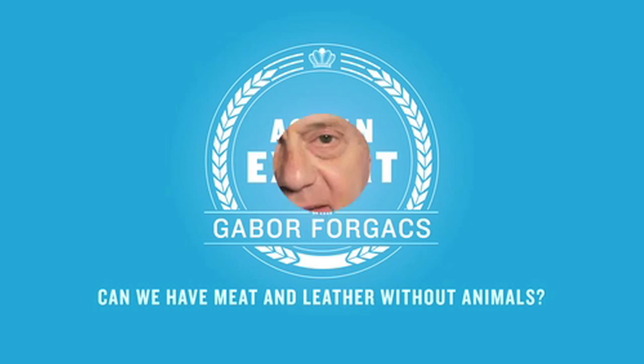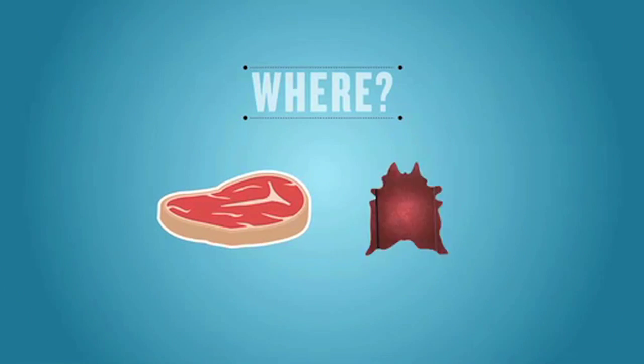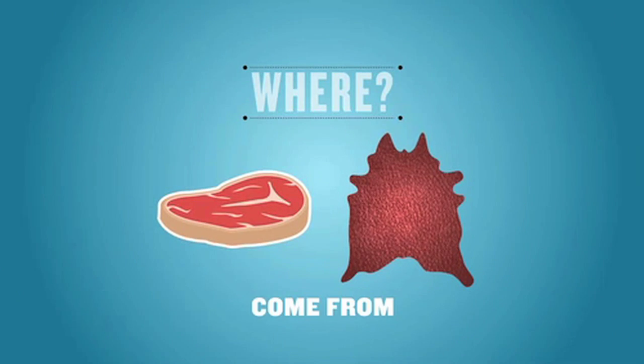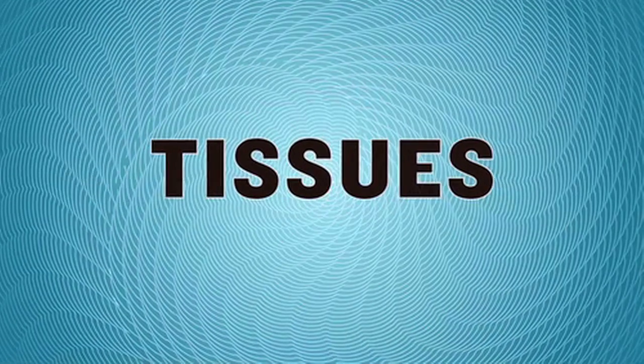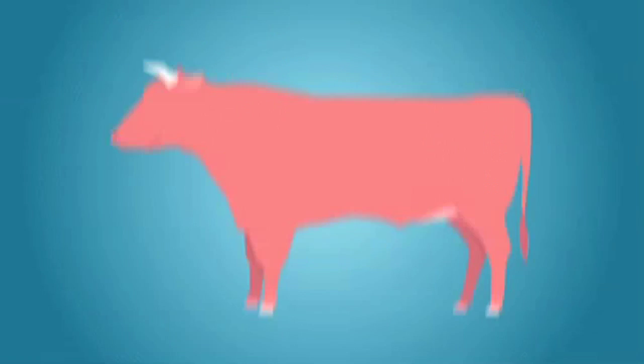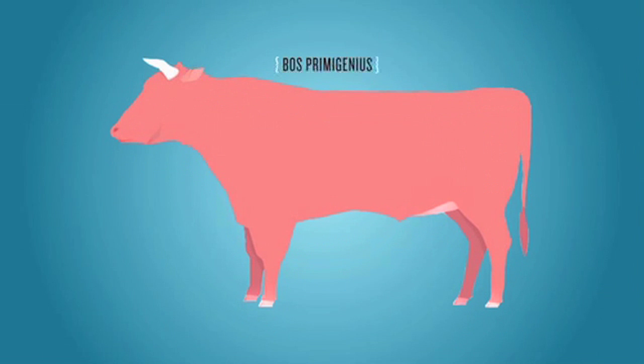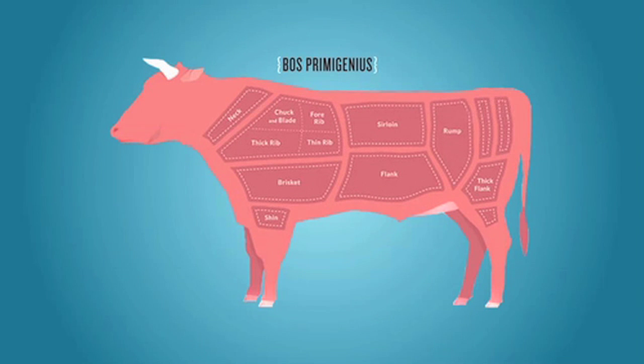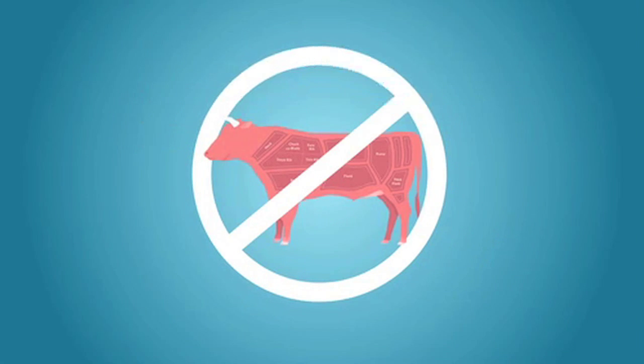How can we make meat and leather without having animal farms? Let's go back for a second to understand where meat and leather come from in the first place. Those are tissues that originate from the animal, but in order to have those products we don't have to have the entire animal.